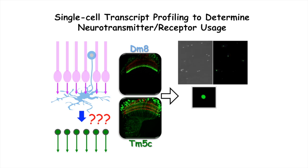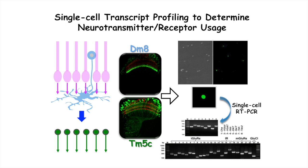I isolated GFP-labeled neurons, carried out single-cell RT-PCR, and found that Tm8 expressed vesicular glutamate transporter and Tm5c expressed four kainate-type glutamate receptors, indicating that Tm8 provides excitatory glutamate input for Tm5c.